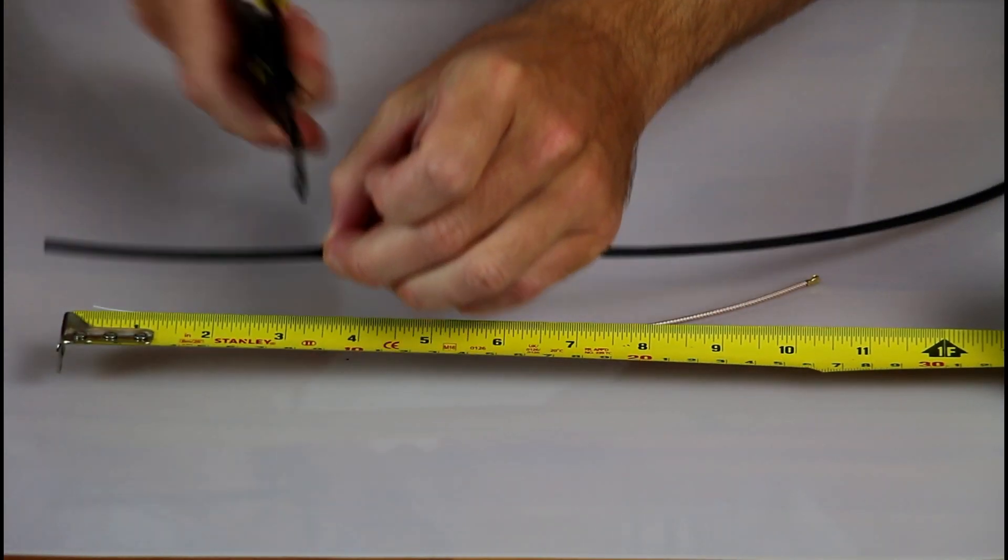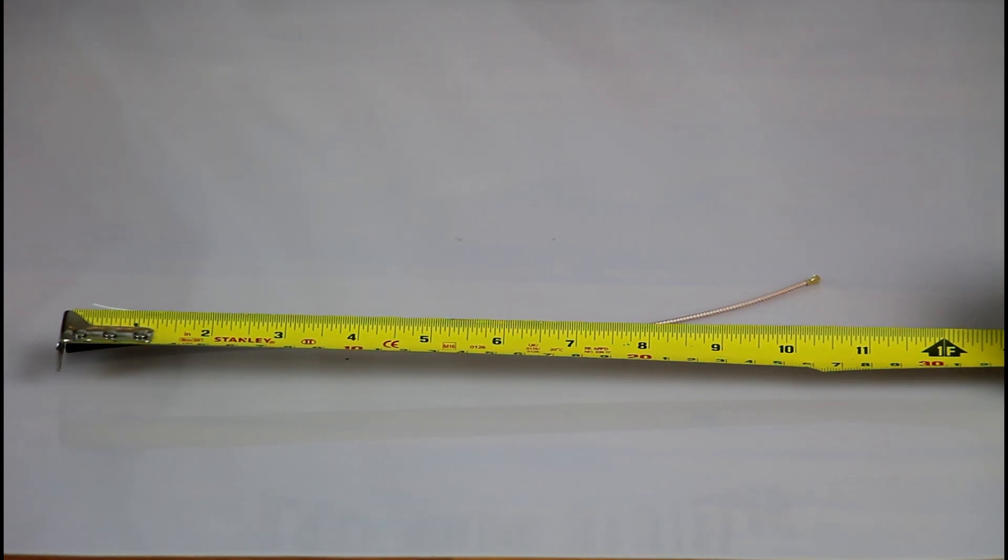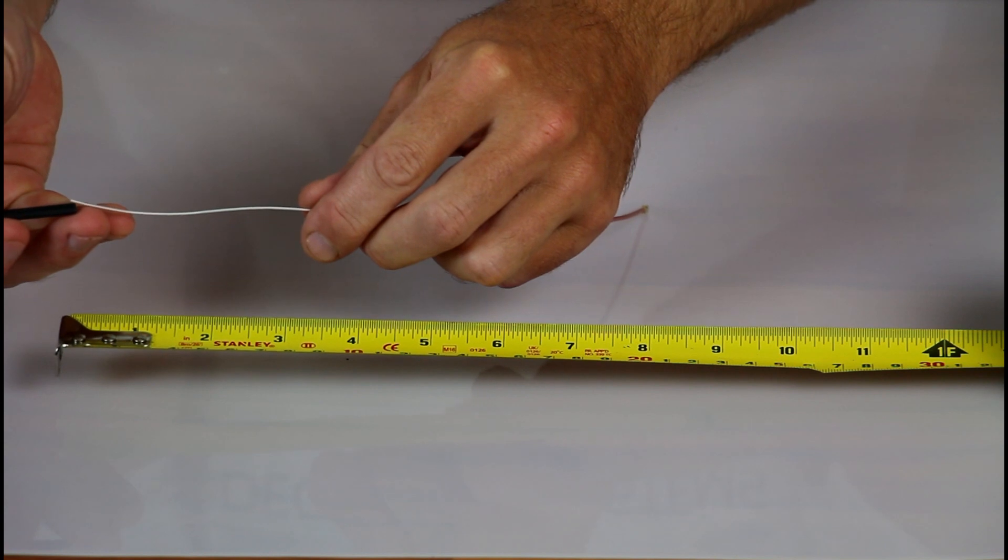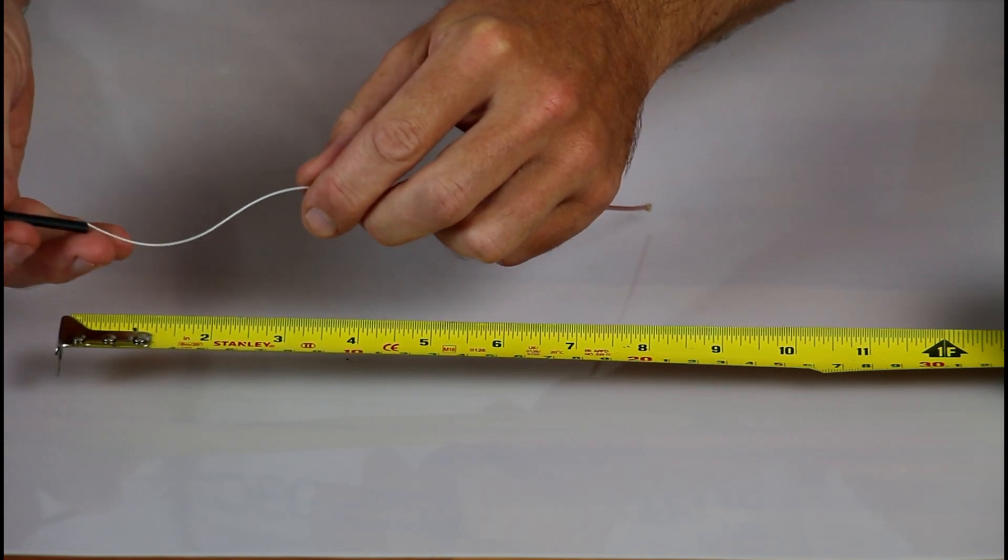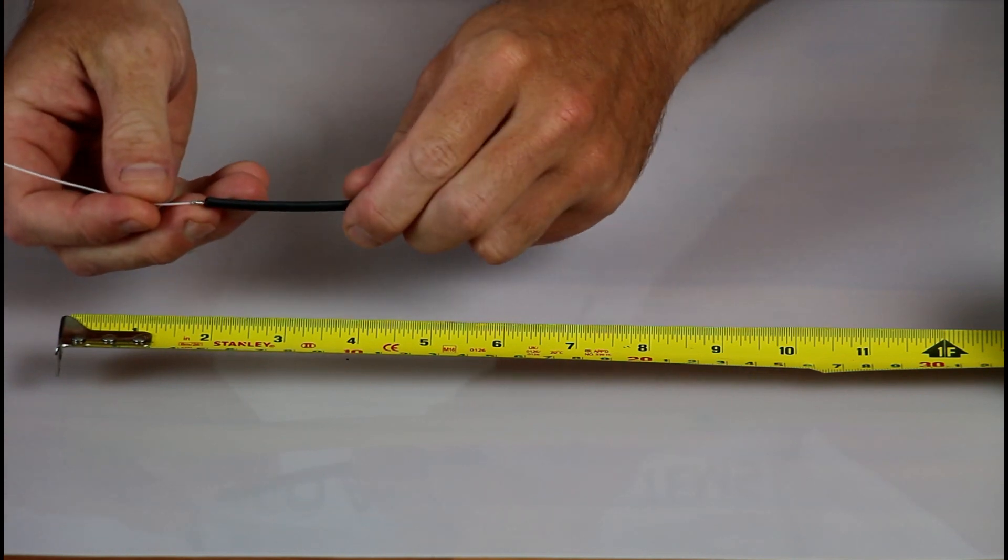The next step is to strip our 1 1/8 inch or 3.5 millimeter heat shrink tubing so that it's about three and a half inches long. This is longer than the shielded portion should be.